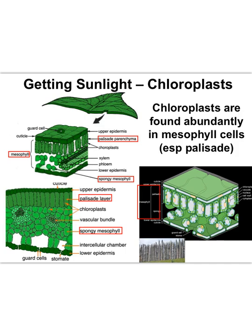Spongy mesophyll gets its name because it's spongy — there are a bunch of gaps in it. Those gaps in spongy mesophyll are really important for creating space for carbon dioxide to hang out. Palisade mesophyll gets its name because it kind of looks like a fence, with cells lining up side by side like the logs that make up a palisade fence.